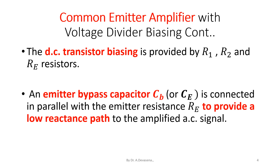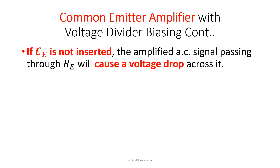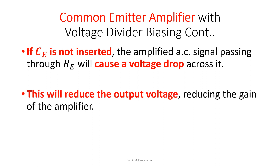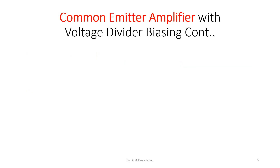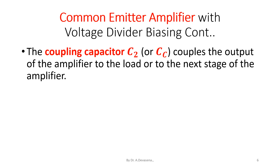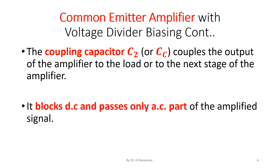An emitter bypass capacitor C suffix E is connected in parallel with the emitter resistance RE in order to provide a low reactance path to the amplified AC signal. If C suffix E is not inserted, the amplified AC signal passing through the resistor R suffix E will cause a voltage drop across it, reducing the output voltage and hence reducing the gain of the amplifier. The coupling capacitor C suffix C couples the output of the amplifier to the load or to the next stage, blocking DC and passing only the AC part of the amplified signal.